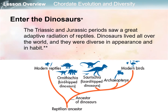The Triassic and Jurassic periods saw a great adaptive radiation of reptiles. Dinosaurs lived all over the world and were diverse in appearance and habit. The evolutionary lineage that led to modern birds came from one group of feathered dinosaurs. There was also one theory that many organisms came from dinosaurs, since dinosaurs included terrestrial, aquatic, and aerial forms.